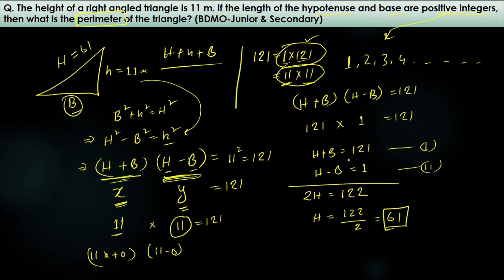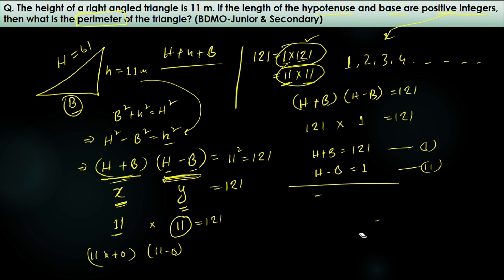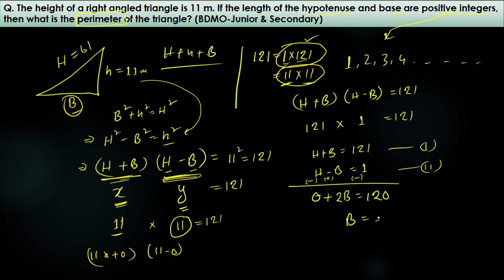Now subtracting the second equation from the first cancels H, giving 2b = 120, so b = 60. The base is 60.